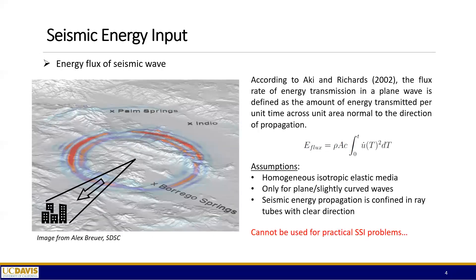First we start with the seismic energy input into the system. When we think about a seismic wave, this is the picture we have in mind. You have an earthquake rupture at one point, a significant amount of energy is released and propagates together with the seismic wave. What we really care about is the amount of energy that arrives at a local site — this energy will transform and dissipate, causing your structure to shake and sustain damage.